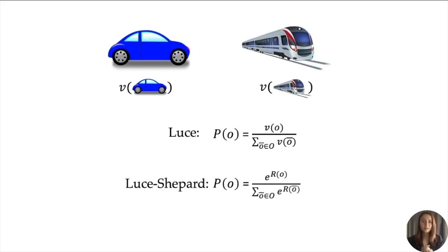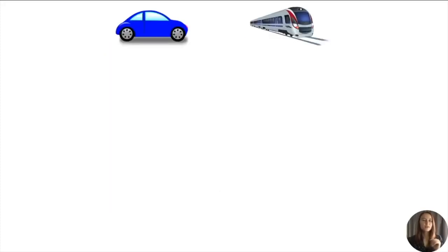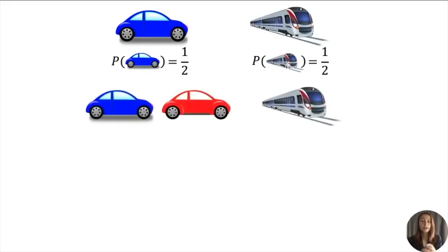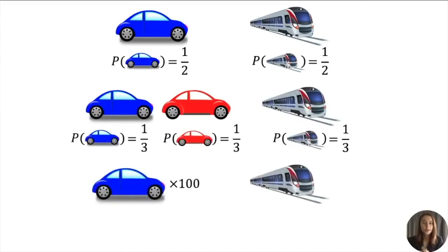However, they suffer from a subtle, yet fundamental shortcoming. Suppose you don't have a preference for driving or taking the train. Then naturally, Luce would predict equal probability for both options. Now, if you have to choose between two cars that only differ in their color and the train, Luce predicts equal probabilities once again. Lastly, imagine a hundred of the same car and one train. The more cars are available, the less likelihood is assigned to picking the train. That seems wrong.